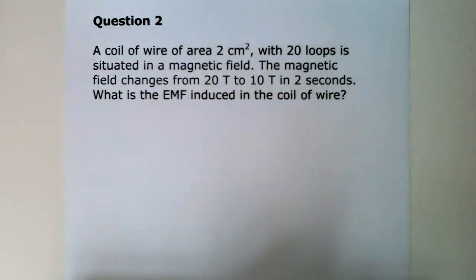Now we will look at an example of a conductor in the changing magnetic field. A coil of wire of area 2 cm squared with 20 loops is situated in the magnetic field. The magnetic field changes from 20T to 10T in 2 seconds. What is the EMF induced in the coil of wire?